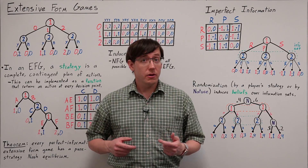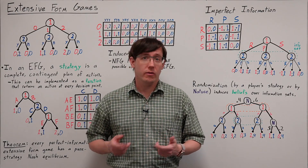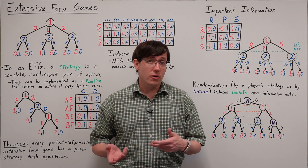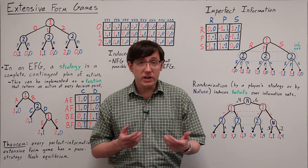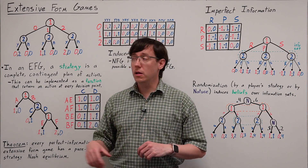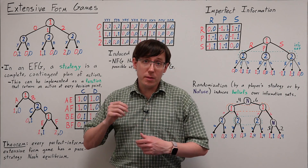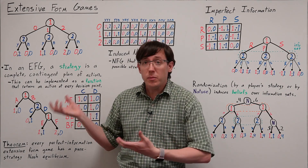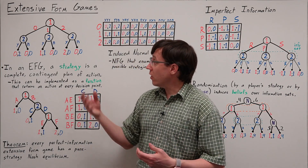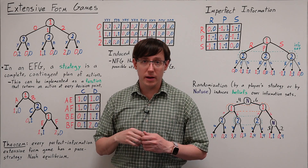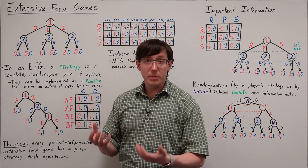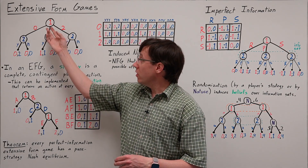All the games we've studied so far have involved simultaneous moves, so we've represented them using the normal form payoff matrix. But many strategic interactions involve sequential decisions where players are choosing actions at different times. So to represent these interactions we need a different type of model, the extensive form game tree, which lets us encode the timing information of a sequential game. The core idea is that if players are making decisions at different times, then each point where a player is making a decision will be represented by nodes in a tree.